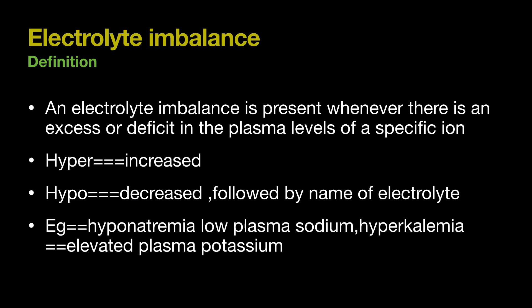Electrolyte imbalance is present whenever there is an excess or deficit in plasma levels of a specific ion. Terms used to describe imbalances contain the prefix hyper or hypo — hyper for increased and hypo for decreased — followed by the name of the electrolyte in its Latin form. For example, hyponatremia means low plasma sodium, and hyperkalemia means elevated plasma potassium.